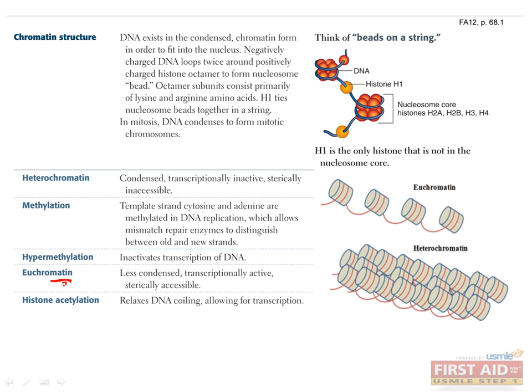This is known as euchromatin, which you can see here. In the opposite situation, having more methylation or less acetylation results in tighter binding of DNA to histones, so it can't be transcribed, and this is known as heterochromatin, which is shown here.